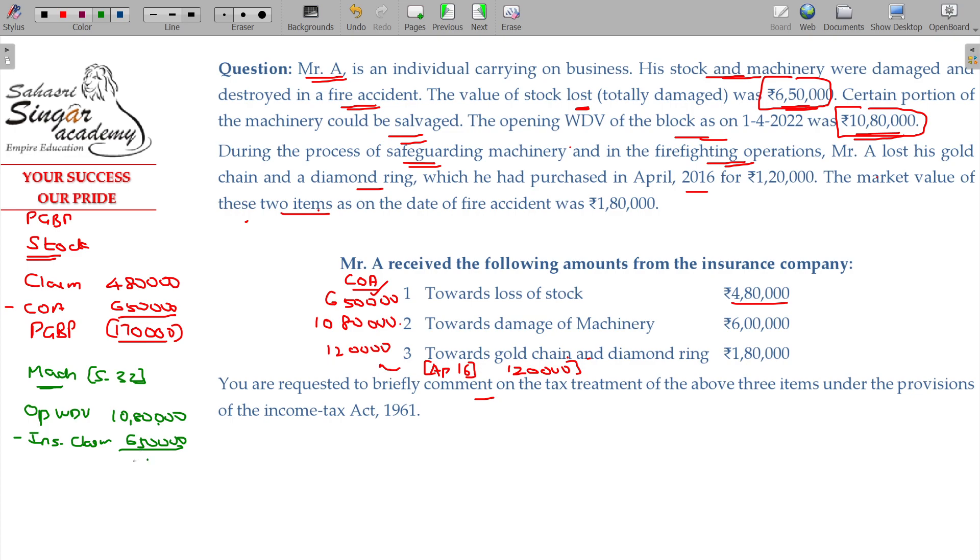What comes? 3 lakhs, 4 lakhs 30. 4 lakhs 30. Is there any asset? If asset value is there, we can take that as opening WDV next year or we can depreciate. But if no asset is there, this will be considered a short-term capital gain.